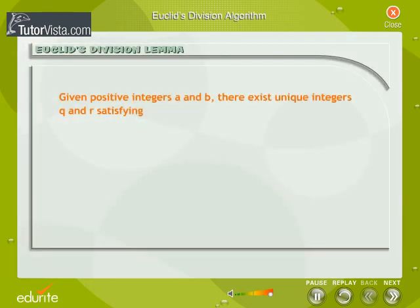For each pair of positive integers A and B, there are whole numbers Q and R, such that A is equal to BQ plus R, where 0 is less than or equal to R less than B. Note that Q can also be 0. This statement is called Euclid's Division Lemma.